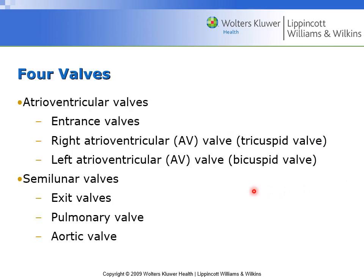The atria receive blood and the ventricles pump it — either through the pulmonary circuit to the lungs or through the systemic circuit throughout the body. The valves linking the atria and ventricles are the right AV valve, also known as the tricuspid, and the left AV valve, the bicuspid — named for their three and two parts respectively. The semilunar valves are the exit valves: the pulmonary valve goes to the lungs and the aortic valve leads into the systemic circulation.